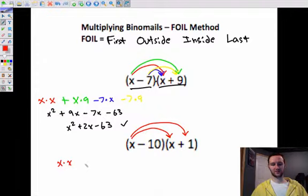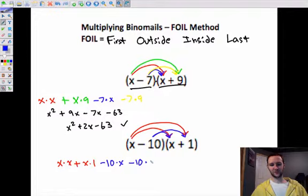And that gives me x times x plus x times 1. And then I'm going to take the negative 10 and I'm going to do the same thing. Multiply it by both of those. So that's negative 10 times x and negative 10 times 1.